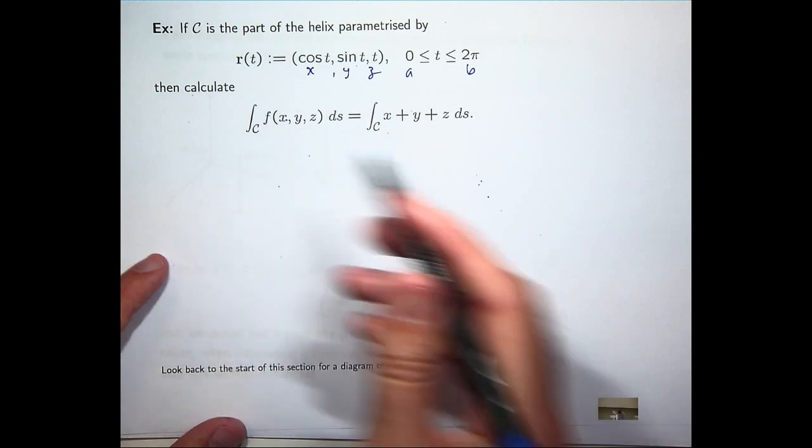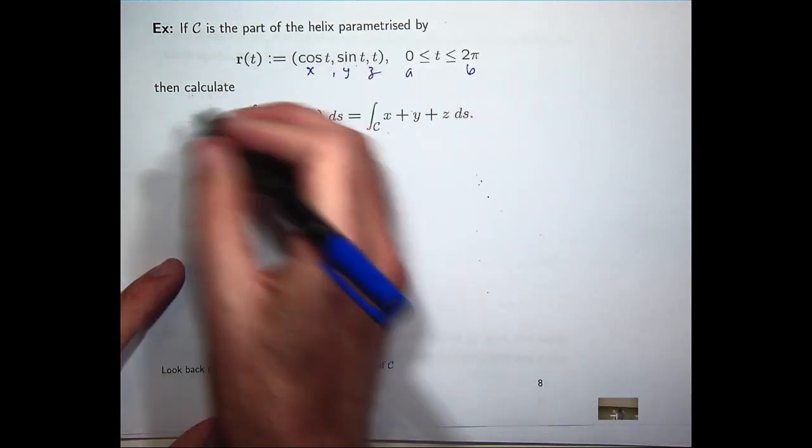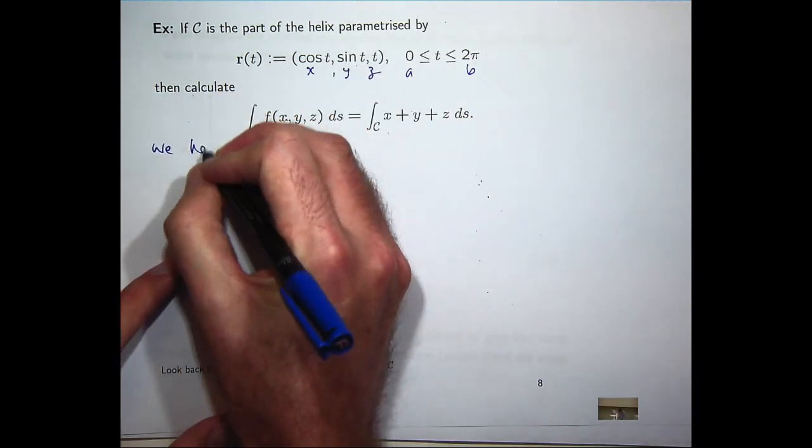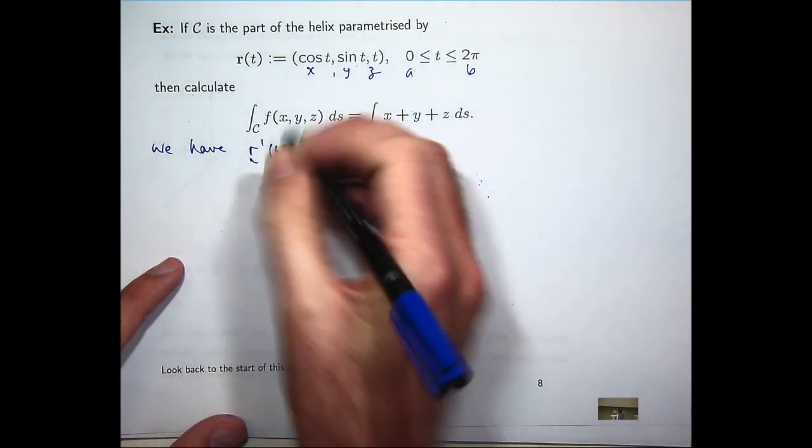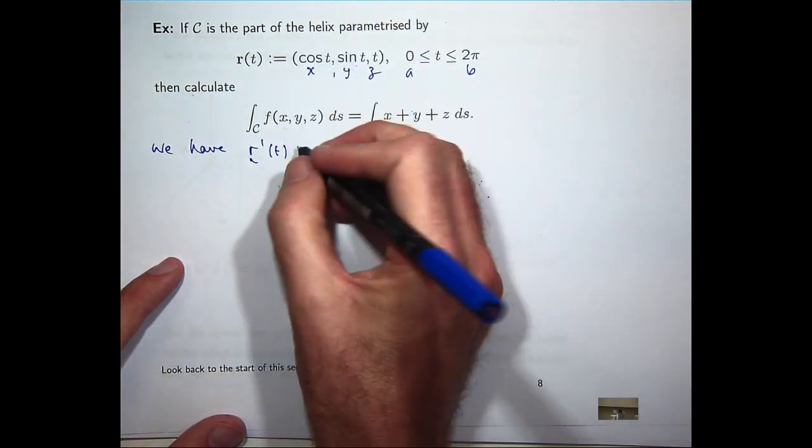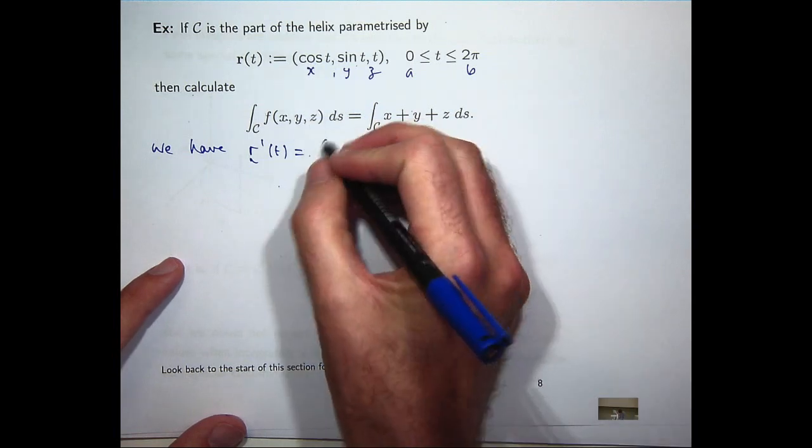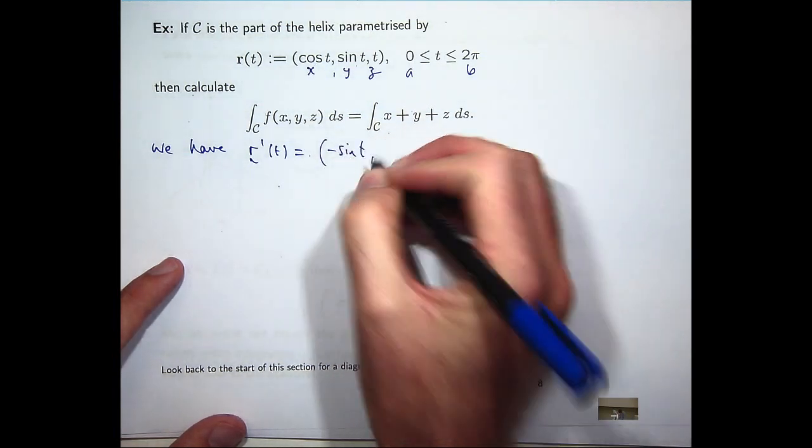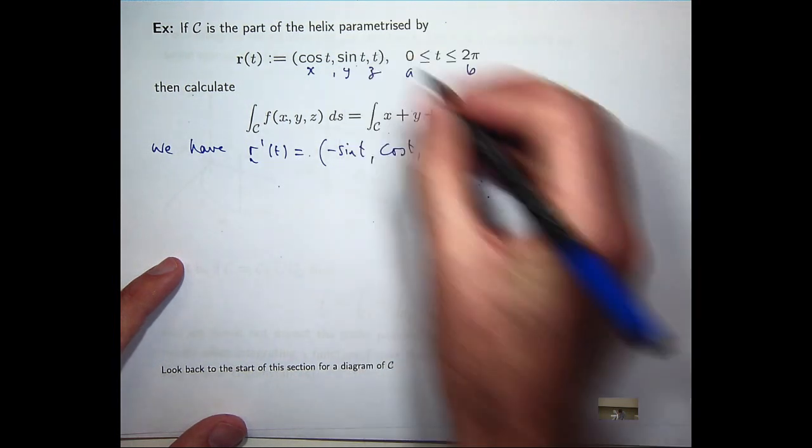Let's just calculate the derivative first. You can do it the other way. So I differentiate the components with respect to t. Cosine goes to minus sine, sine goes to cosine, and t goes to 1.